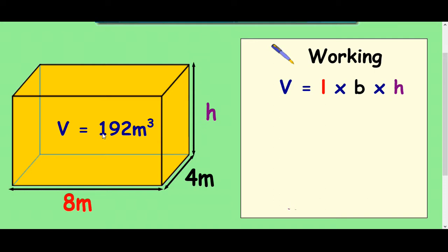So we kind of already know the answer here, it's telling us the volume is 192 meters cubed. We're working back to see what 8 times 4 times something makes 192. So the way to show the working for this is to write the normal formula volume equals length times breadth times height.